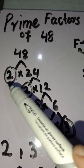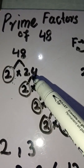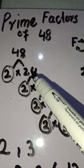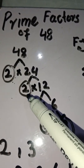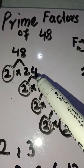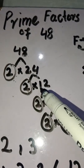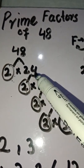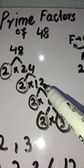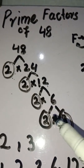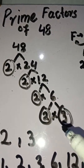We circle 2 as a prime factor and now divide 24 by the smallest prime number. 2 is the smallest prime number which divides 24. Then 2 multiplied by 12 gives 24, 2 multiplied by 6 gives 12, and 2 multiplied by 3 gives 6.